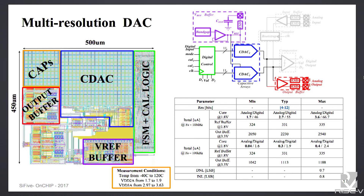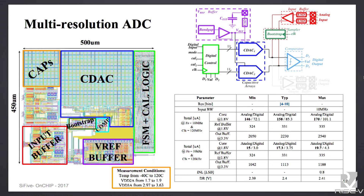We are also releasing data converters — high multi-resolution data converters. You can use them for applications that don't require a lot of resolution, and you can even program the resolution from the DAC. This DAC is implemented with an ADC because we are reusing the core. If you pull the bootstrap and the driver, you will be able to use it as a SAR ADC, as shown in the next slide. So you can use the same IP as an ADC — a multi-resolution SAR ADC, verified within corners and Monte Carlo.